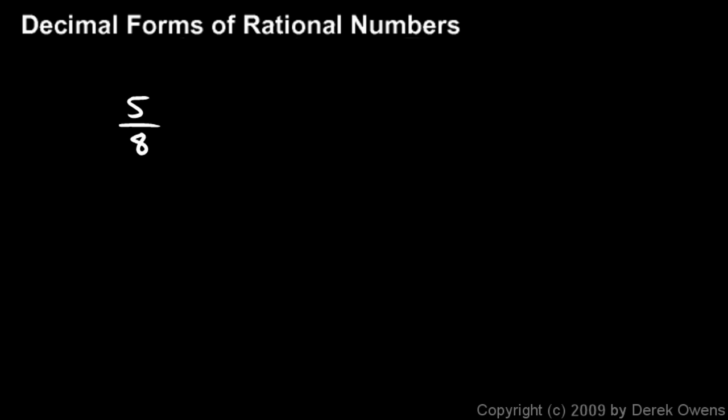So 5 eighths is 5 divided by 8, and we can do the division. And so here it is, 5 divided by 8, written in the notation that we normally use to work out the division, and I'm going to put some zeros out here because we'll need them, and let's do this.